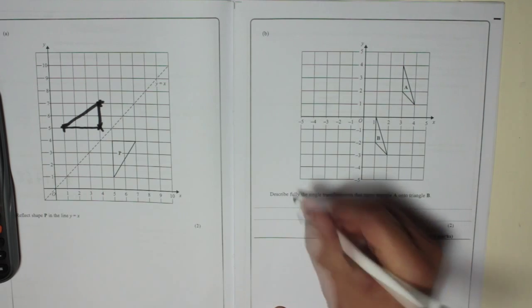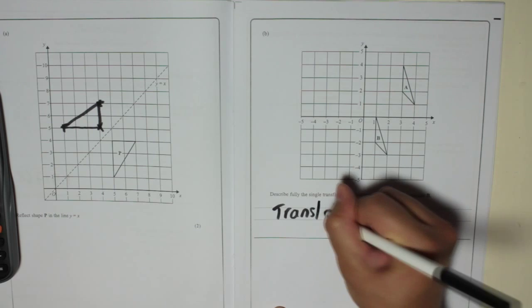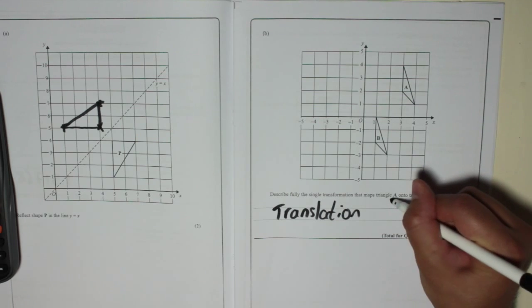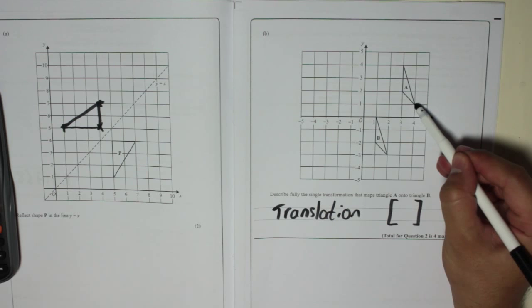So describe fully the single transformation, two marks. First mark is by saying translation. And the second mark is giving a vector translation.